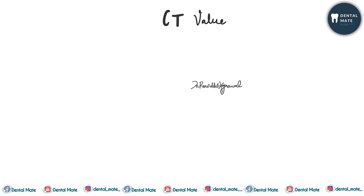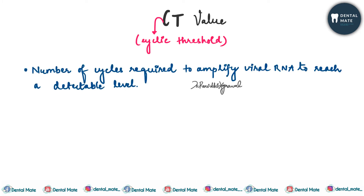RT-PCR gives a Cyclic Threshold value or CT value. The CT value is basically the number of cycles required to amplify the viral RNA to reach a detectable level. So the CT value tells us how many cycles we are amplifying the viral RNA so that it becomes detectable. If the viral load is high, we need fewer amplification cycles, so the CT value would be less.